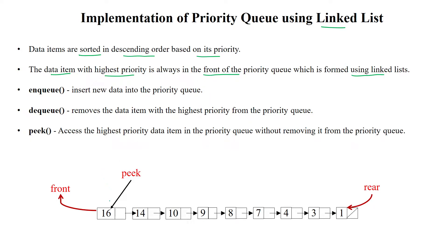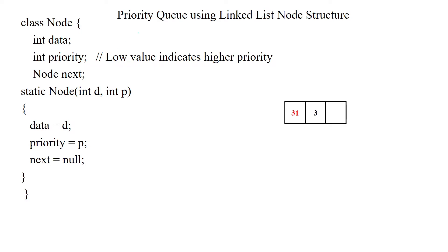The linked list head will be denoted in the priority queue by using 'front'. The data will be inserted at the rear end. The first data will be accessed by using the method 'peak'. The highest priority value will be accessed using the variable 'peak'. Data will be inserted by using the enqueue operation and removed from the beginning of the priority queue by using the dequeue operation.